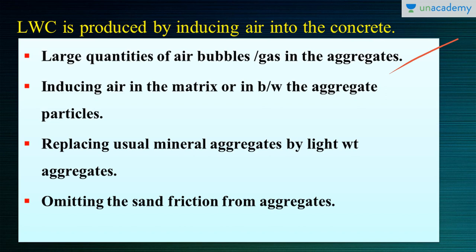The third method is replacing the usual mineral aggregate with lightweight aggregates. These lightweight aggregates will have a specific gravity less than 2.6. The air voids introduced should be clearly distinguished from the extremely fine voids produced by air entrainment, known as aerated, cellular, or foamed concrete. Otherwise the air voids may combine and increase porosity, which affects the strength.